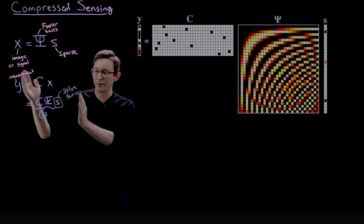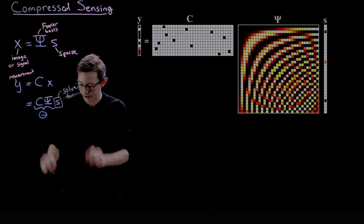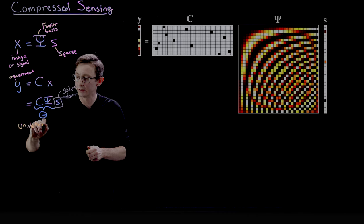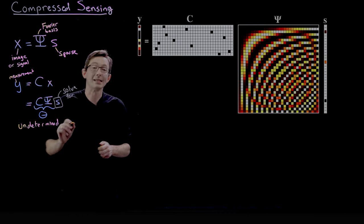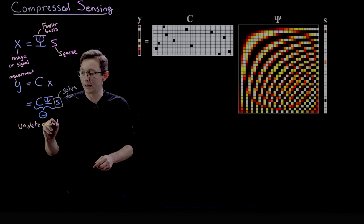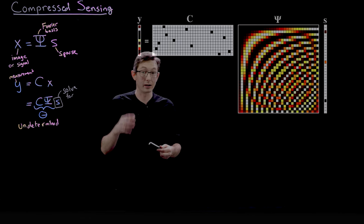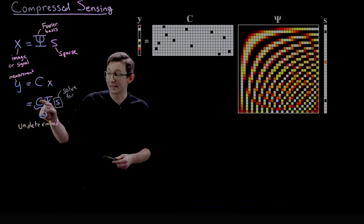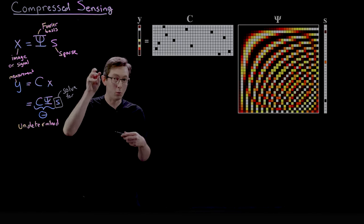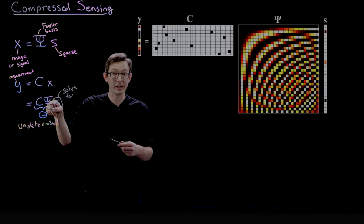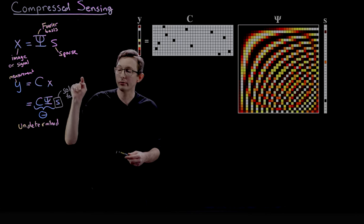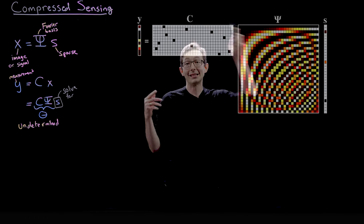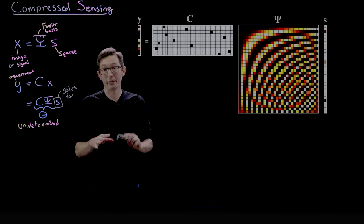Now, this system of equations is what's called underdetermined. This is really important. This is an underdetermined system of equations. And we've seen this before in the SVD chapter. We have measurements of y. We know what C and psi are. We know which pixels we measured and we know what our Fourier transform basis is. And we're trying to solve for s, the sparse vector of coefficients that is consistent with those measurements.